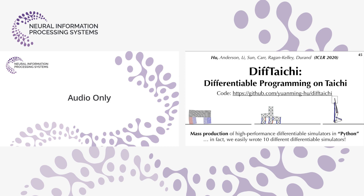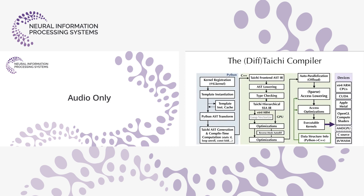Taichi was not differentiable, so we developed DiffTaichi — a differentiable programming extension on Taichi, published at ICLR 2020. In DiffTaichi we can easily mass-produce high-performance differential simulators in a Python-like language, demonstrating very high productivity. We easily wrote 10 different differential simulators using DiffTaichi. The Taichi compiler progressively lowers high-level Python kernels into low-level executable code for parallel devices.